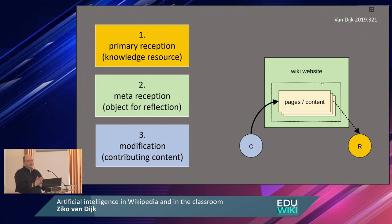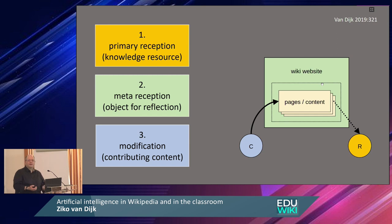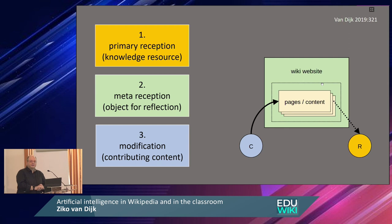In class, you can use Wikipedia as a knowledge source — you tell the students, go to Wikipedia, read the article. Meta-reception means that you use it as an object to talk about, to analyze: what is the background of Wikipedia, how does it work? And the third is the modification. Most people think about Wikipedia in education as writing articles in the classroom, but not always. And often for the third, you need the second — you have to talk about how a wiki works.